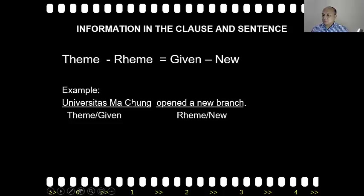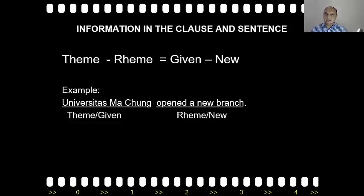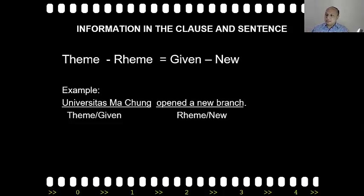For example, 'Universitas Macung opened a new branch.' Here, 'Universitas Macung' is the theme — it is something that has been given, something already known by the listeners or readers. It's given, meaning it has been established as a known fact. And then the next phrase, 'opened a new branch,' is something new — information the listeners or readers have not known about. That's why it is called new information, and this corresponds with rheme.